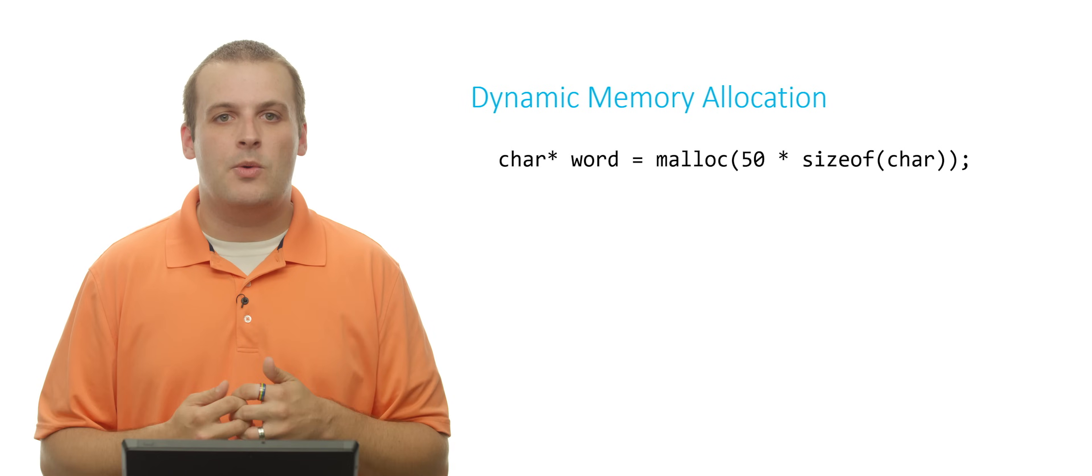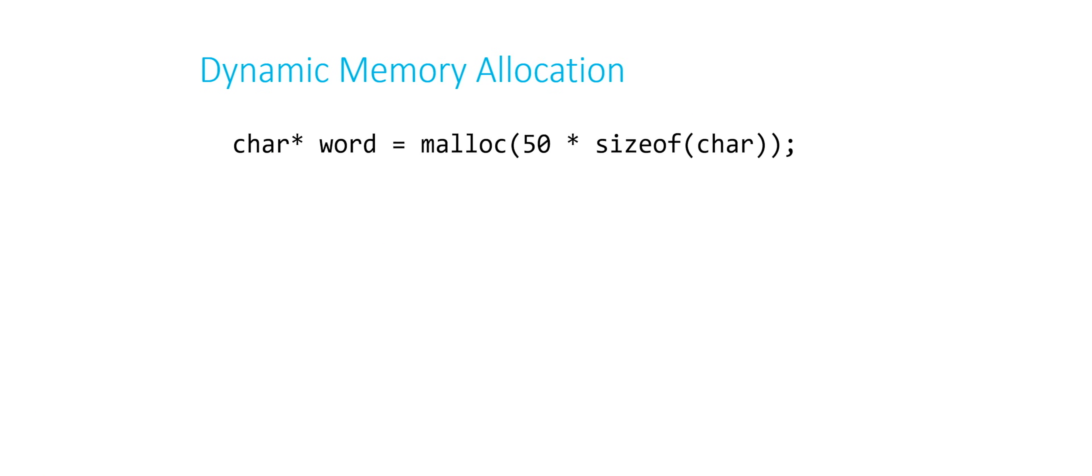So here's another example. Let's say we want to malloc a 50 character long array. So basically a big string. We're going to call it word. We dynamically allocate it. Then we just do some stuff with it. Maybe we are in the middle of a function.